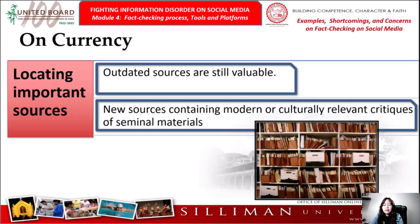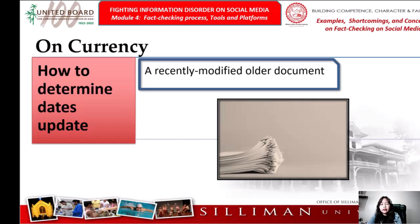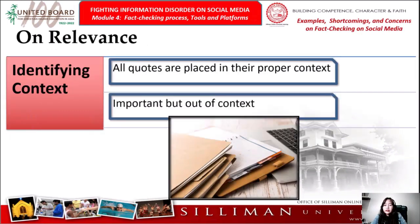Second, locate important sources. Remember that outdated sources may still be valuable. If a foundational work is still relevant — such as relating to culture, or the earliest writings of a philosopher, or the Bible — it may be worthwhile to examine it. An older document that has recently been modified might still contain the most recent data and analysis. Note that there are occasions when something seems important but is actually out of context, so make sure that all quotes are placed in their proper context.